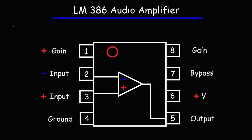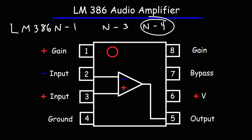Here are some common LM386 devices. There's the LM386N-1, the N-3, and also N-4. The N-4 can use a higher supply voltage. With the N-1, the typical supply voltage is around 4 to 12 volts, with a maximum supply voltage of 15 volts. With the LM386N-4, you could use a higher voltage, up to 18 volts.